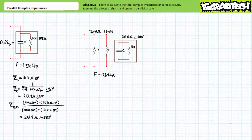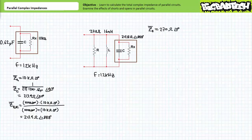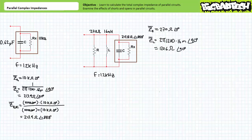As an application of this principle, consider the same non-ideal capacitor with an impedance of 213.9 ohms at an angle of negative 88.8 degrees in a parallel relationship with a 270 ohm resistor and a 16 millihenry inductor. The 270 ohm resistor is an impedance of 270 ohms at an angle of zero degrees. Substituting our given values into the inductive impedance equation, we find the 16 millihenry inductor at 1.2 kilohertz to be an impedance of roughly 120.6 ohms at an angle of positive 90 degrees.